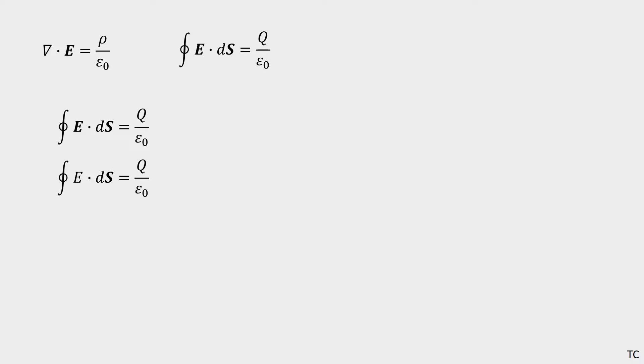The purpose of finding a surface where the electric field is the same at every point is that you can pull E out of your surface integral so that you're just integrating over the surface, and that integral comes out to just the area.